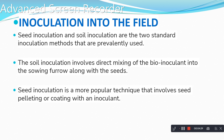Inoculation into the field: seed inoculation and soil inoculation are two standard inoculation vectors that are prevalently used. Soil inoculation involves direct mixing of bio-inoculants into the sowing furrow along with the seeds. Seed inoculation is a more popular technique that involves seed pelleting or coating with an inoculant.